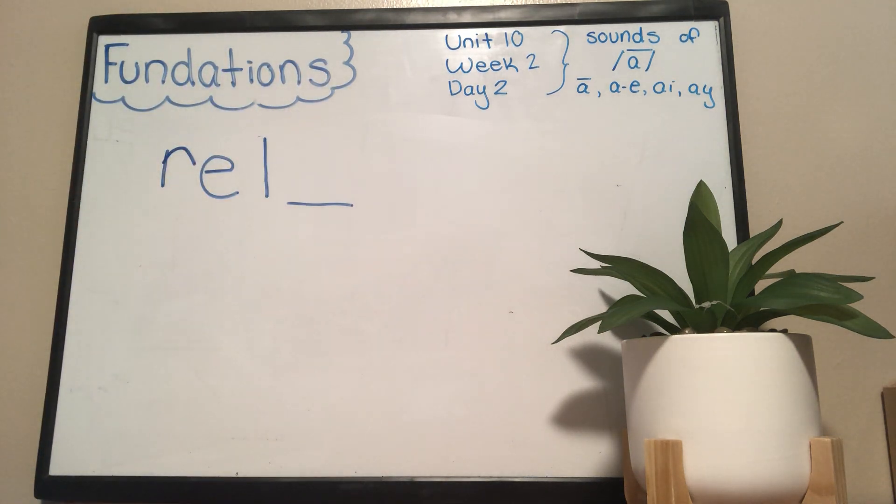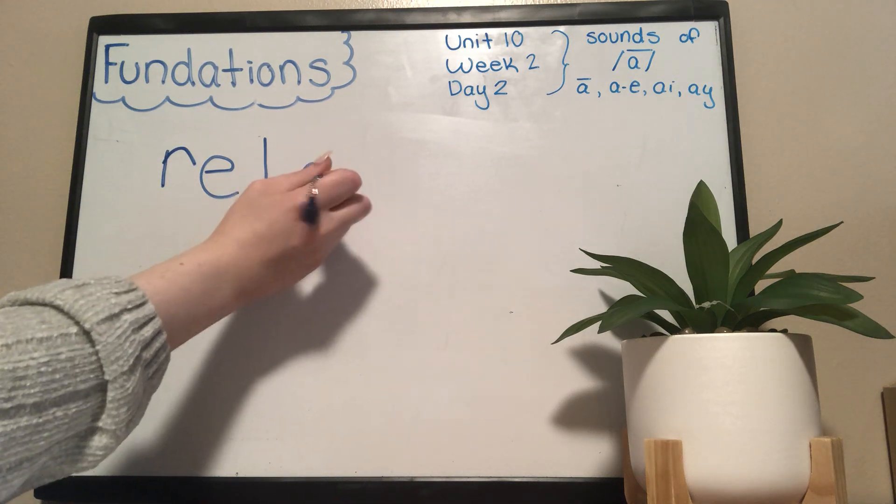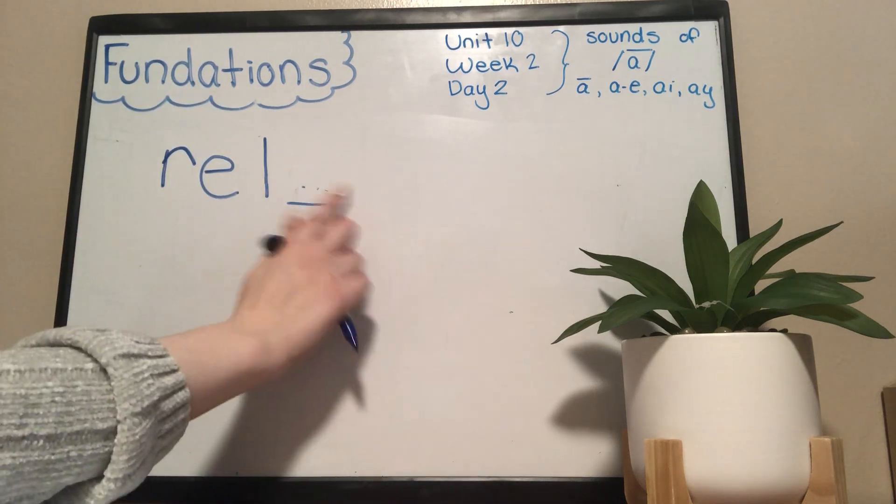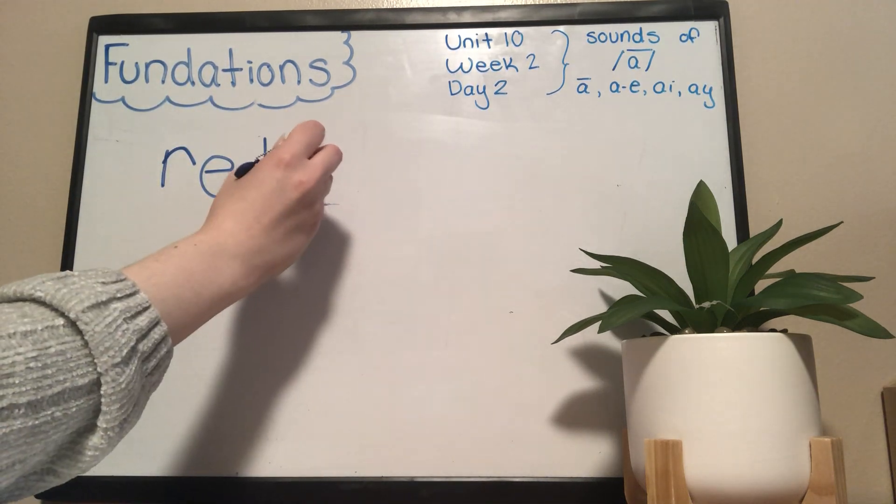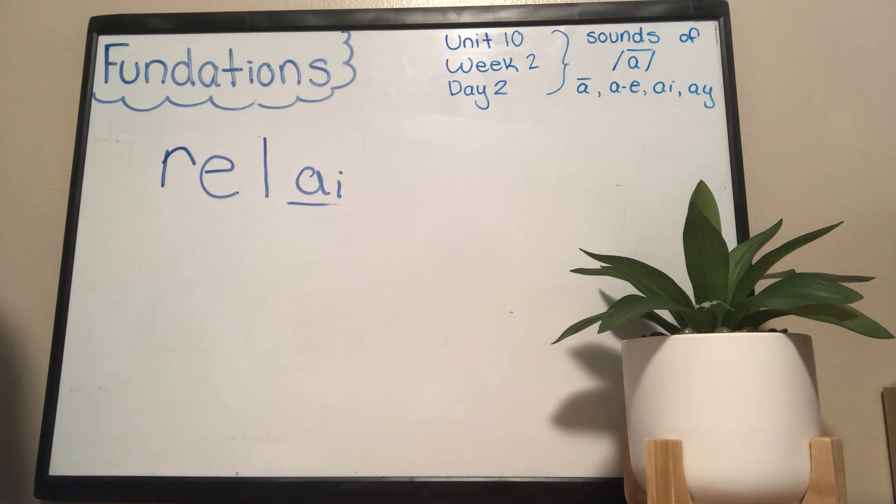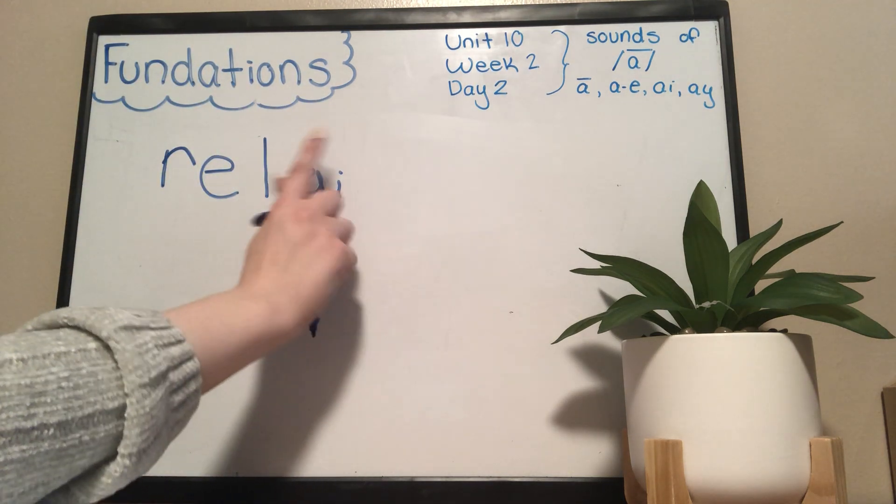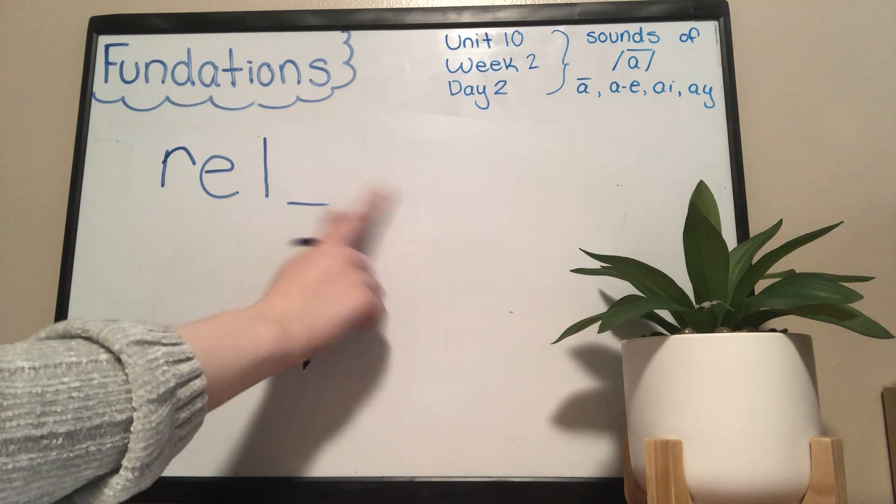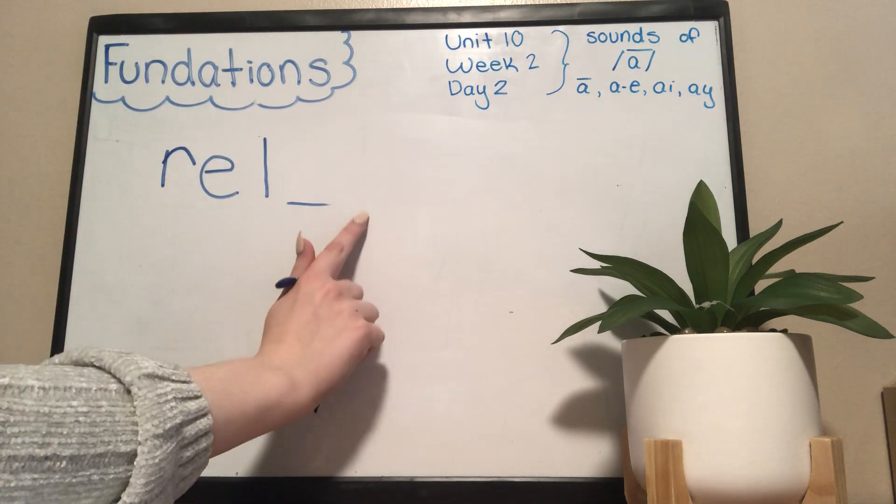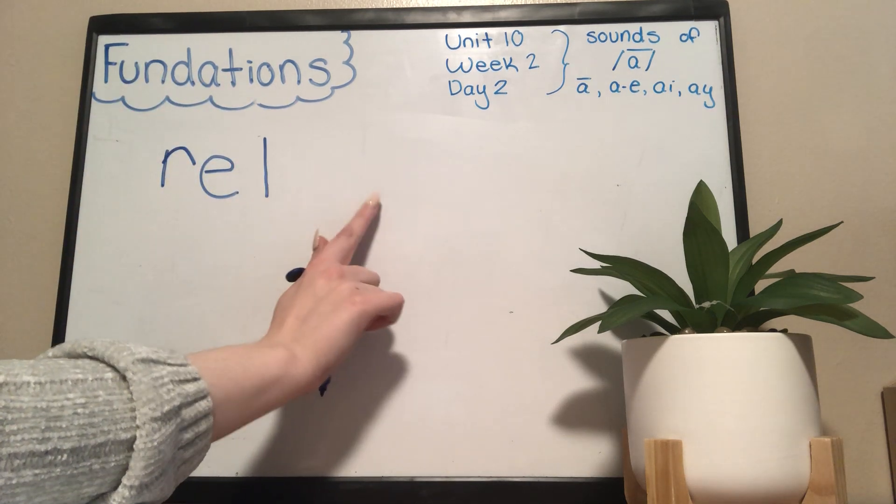And then we have our choices over here for our A sound. So regular A? No, that's not really looking right to me. AI? No, we know that an AI can only come in the middle of the word or maybe sometimes at the beginning, but never ever at the end. There's no consonant here so we can't do A dash E.